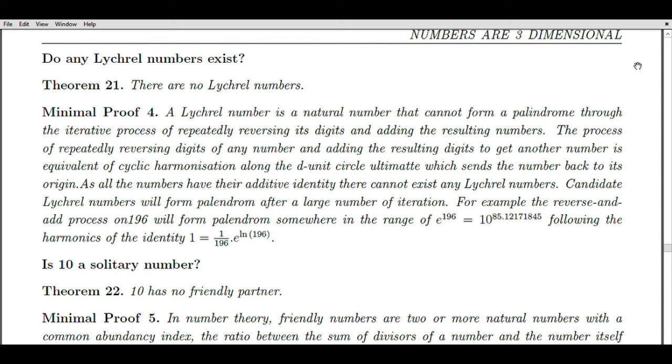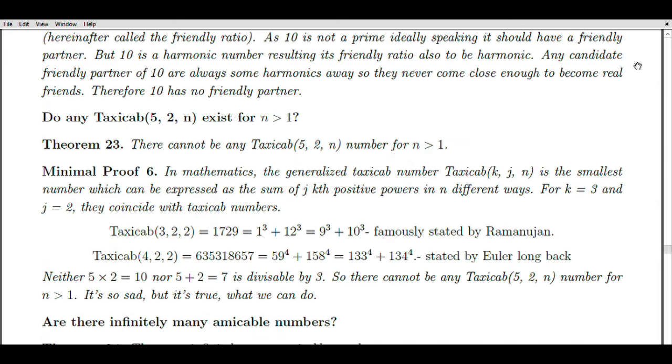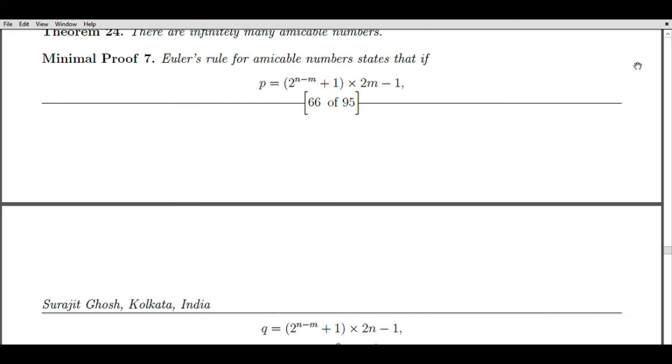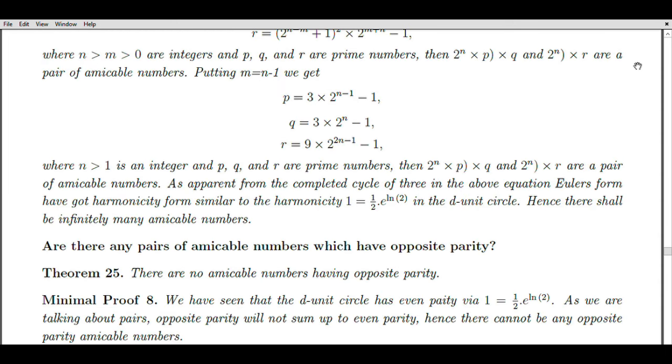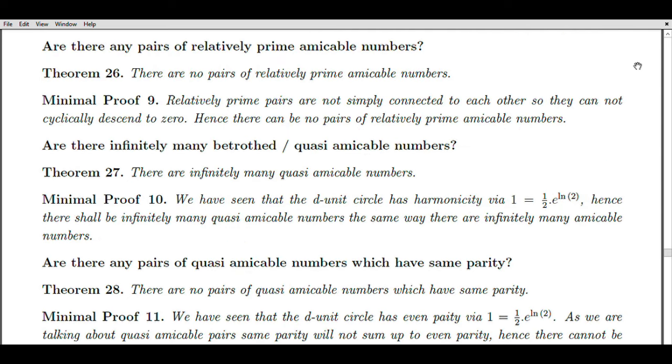General relativity, Einstein's theory of gravity, describes the fabric of space-time as curved and influenced by mass and energy. If imaginary numbers were integrated into the real number line, it could potentially impact the mathematical framework of general relativity. New possibilities might arise for the analysis of complex space-time geometries, including those involved in black holes, gravitational waves, and the early universe. It could lead to novel insights into the relationship between gravity and quantum mechanics, an area that remains unresolved even today.